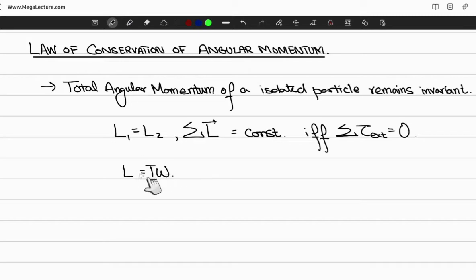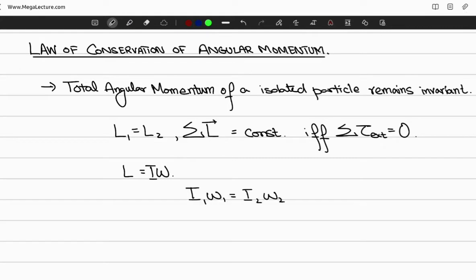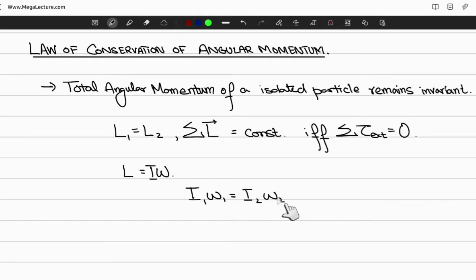Mathematically, if L = I × omega, then we can write that I₁ω₁ = I₂ω₂, meaning the angular momentum at point one equals the angular momentum at point two.